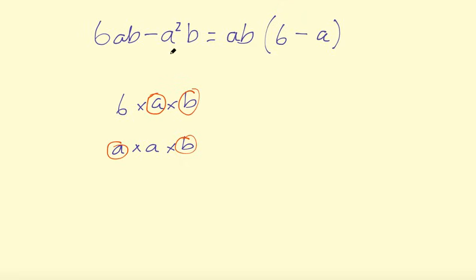Okay, so, and then you can always double-check. You can expand it back out to make sure you get the same thing. So 6ab, 6 times ab is 6ab. And then ab times a is a squared b. So you should end up with what you started with. So that's kind of a way to double-check that you got the right answer.